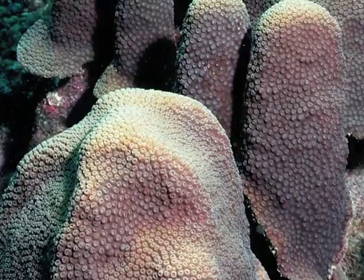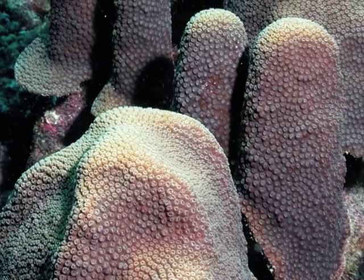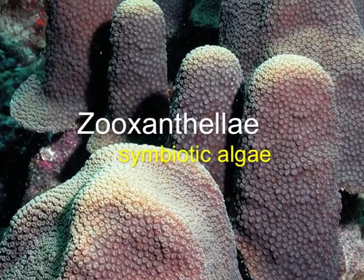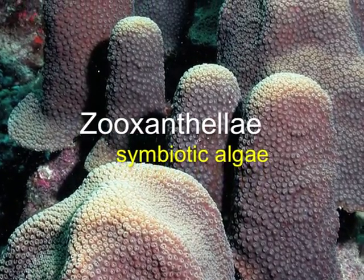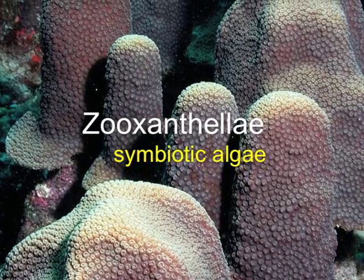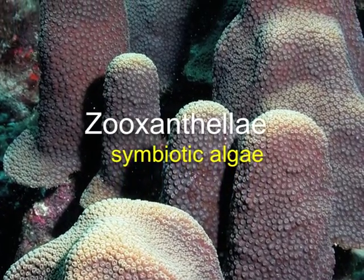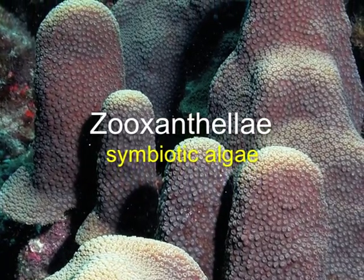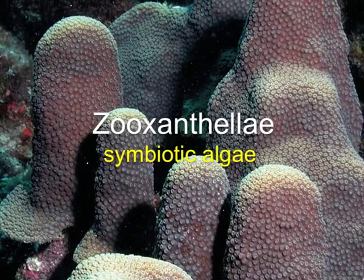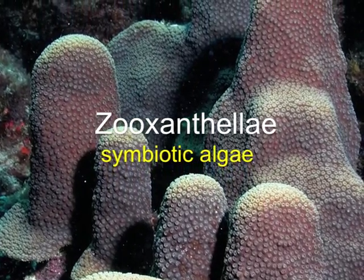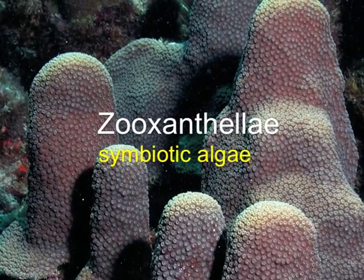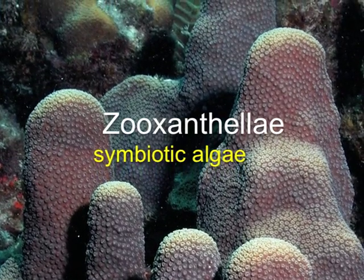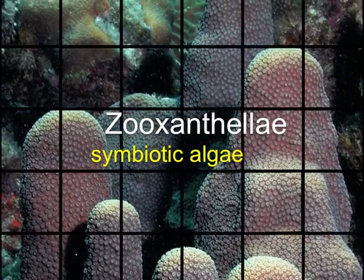In addition to feeding on zooplankton, many corals have a symbiotic relationship with unicellular algae known as zooxanthellae. These cells reside within the tissue of the coral. Zooxanthellae give the coral its color and provide energy through photosynthesis. It has been estimated that as much as 95% of the daily energy requirements of a coral can be provided for by zooxanthellae.